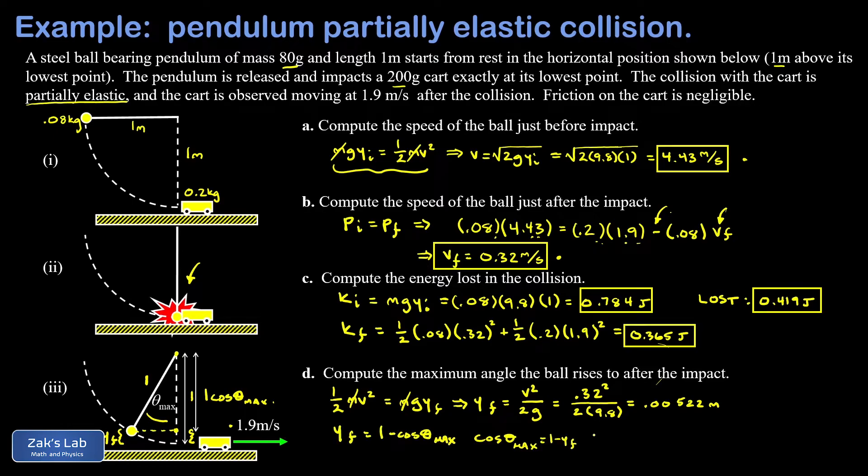We'll go ahead and plug the numbers in here, and we get 0.99478. Then to get theta max, I invert the cosine function. So I have the inverse cosine of 0.99478, and this gives me a final angle of 5.86 degrees. And we're done.